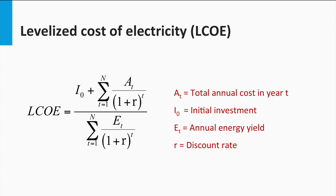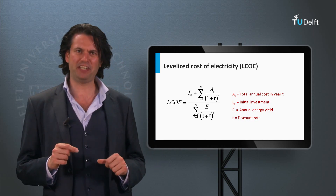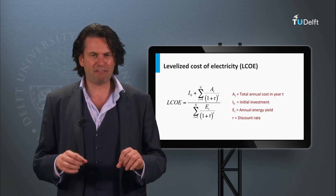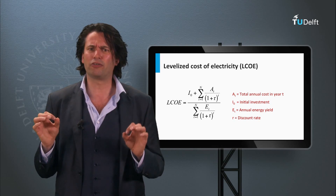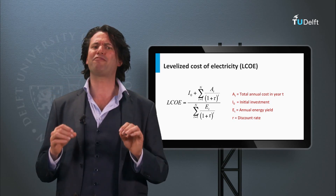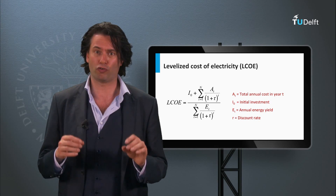Here, At is the total annual cost in year t, I0 is the initial investment, and Et is the annual energy yield or electricity. R is the discount rate, which is a factor used to discount future costs and translating them into present value. Based on the size of the PV generation and the cost of materials, the levelized cost of electricity of the PV project could vary a lot. Also, the discount rates used for evaluation will have an impact on the levelized cost of electricity value.